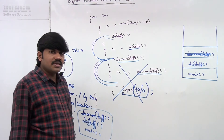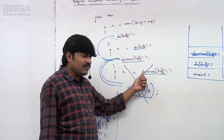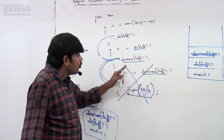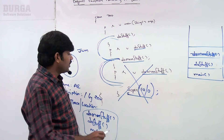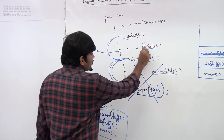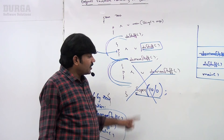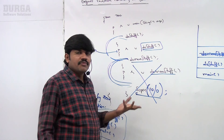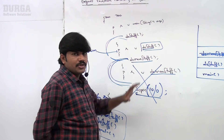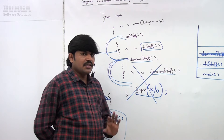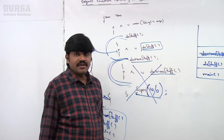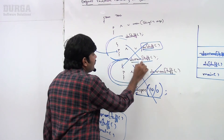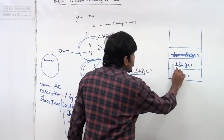Now doMoreStuff is terminated abnormally. JVM asks: who is the caller of doMoreStuff? The caller is doStuff. JVM immediately approaches doStuff and says: you called doMoreStuff, but inside doMoreStuff something went wrong — an exception was raised. You are responsible to handle that exception. Where is your handling code? doStuff replies: I'm not having any handling code. JVM then terminates doStuff abnormally and removes the corresponding entry from the stack.